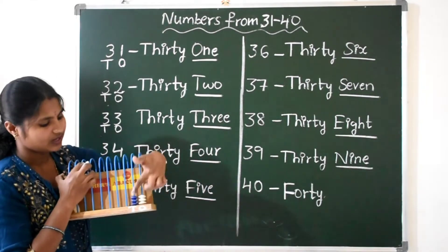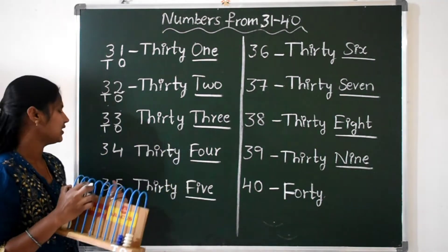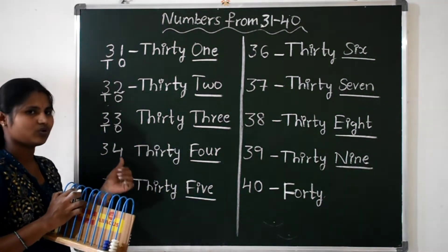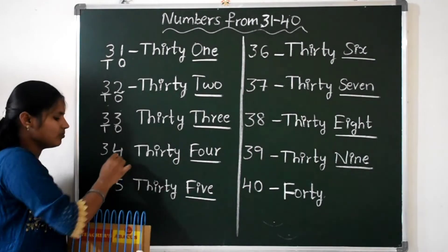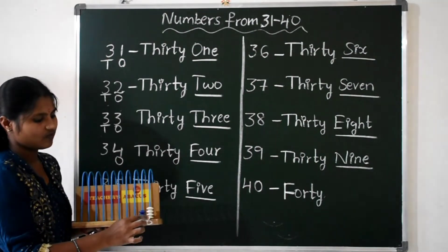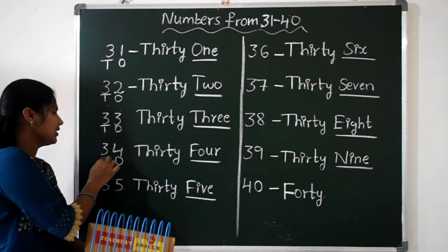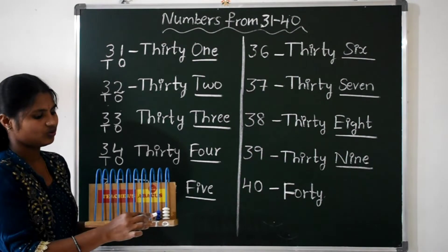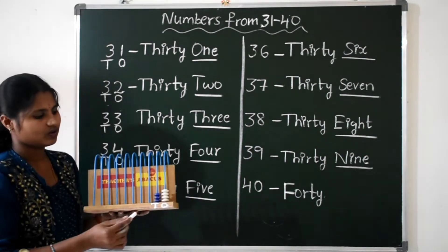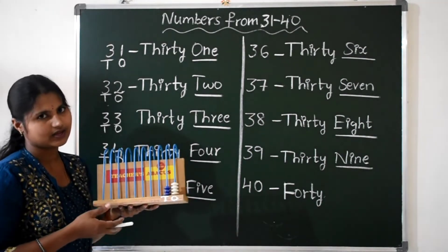Next, 34. In ones place, 4 beads — 1, 2, 3, 4. In tens place, 3 beads — 1, 2, 3. So 3 and 4 makes 34.